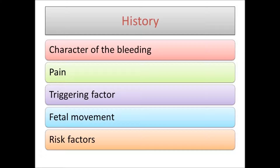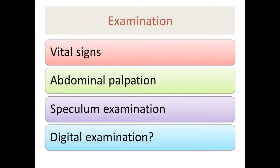We must ask about any triggering factor, and importantly whether intercourse preceded the bleeding episode, as this is seen in cervical ectropion and abruptio placentae. We must also ask about fetal movement, because reduced fetal movement indicates the bleeding is affecting the fetus — a sign of severity. We must also ask about risk factors, for example in abruption we ask about hypertension and hypertensive diseases of pregnancy, and risk factors for cancer.